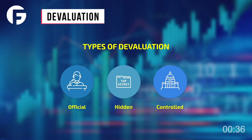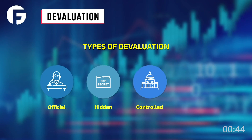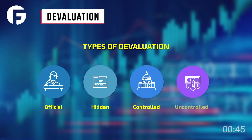Controlled: the central bank of the country takes measures to curb or help the depreciation of the national currency within a limited period of time. Uncontrollable: the depreciation of the national currency happens without reason and is hard to control.